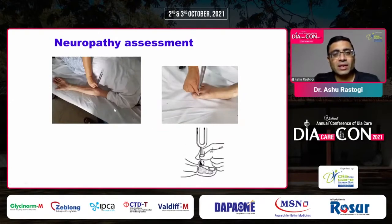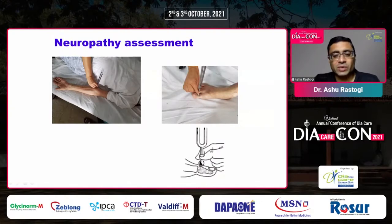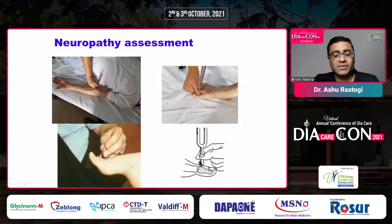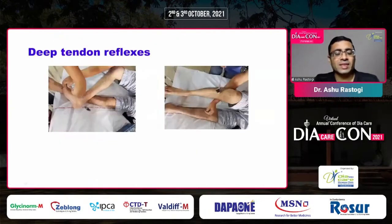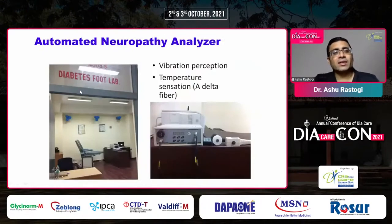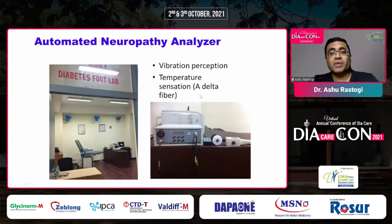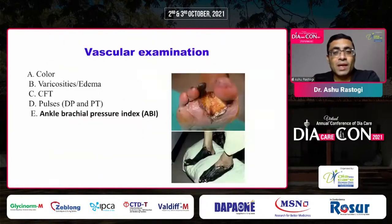We also assess vibration perception at the IP joint and pinprick sensation at the relevant site. Deep tendon reflexes should also be checked. If you have machines that can assess vibration as well as temperature, they are very useful for automated neuropathy assessment. A facility for diabetic foot assessment with such devices is highly recommended.